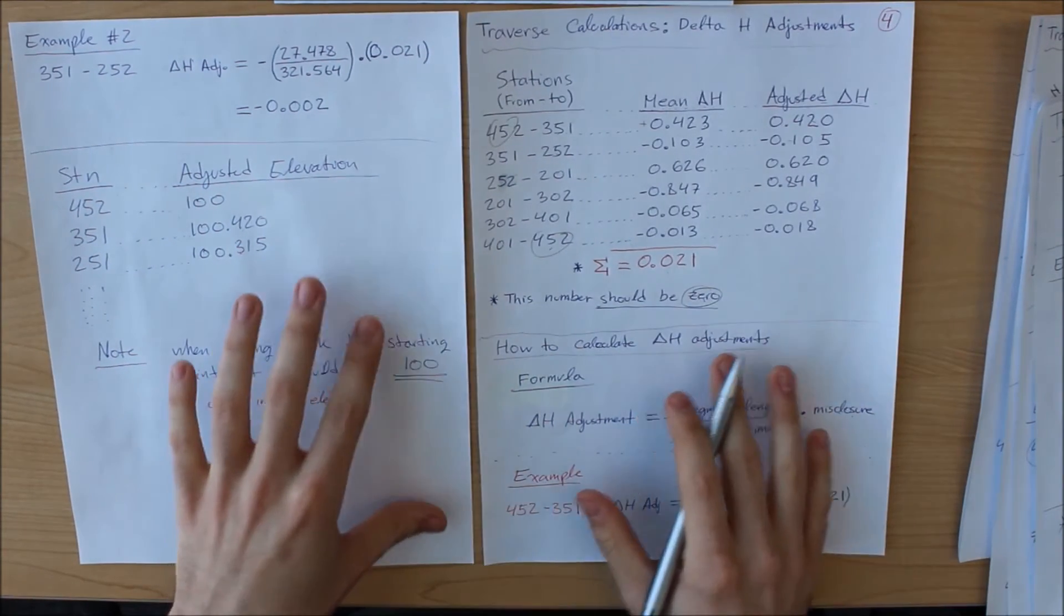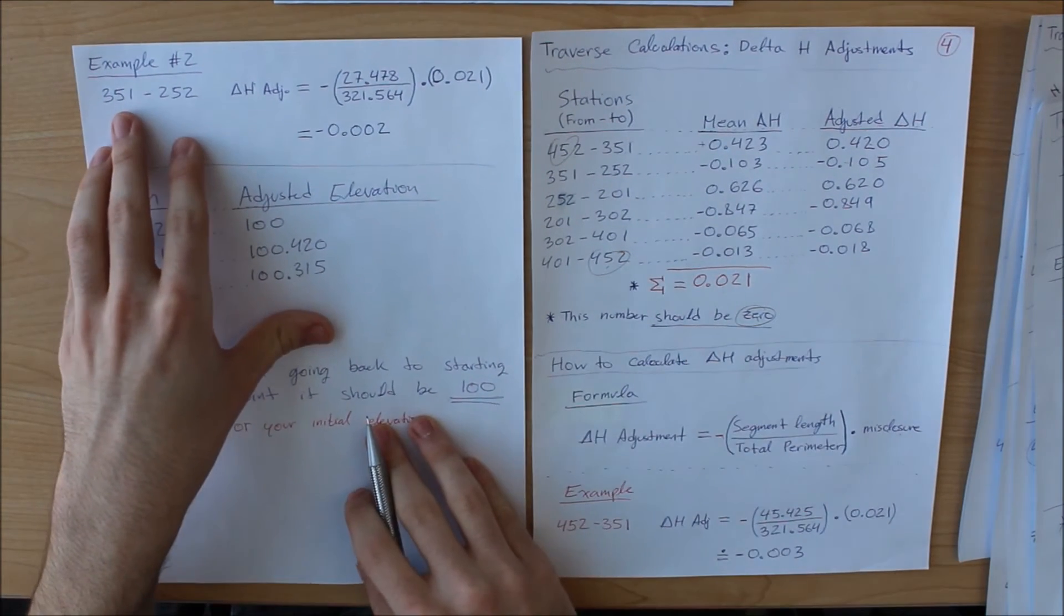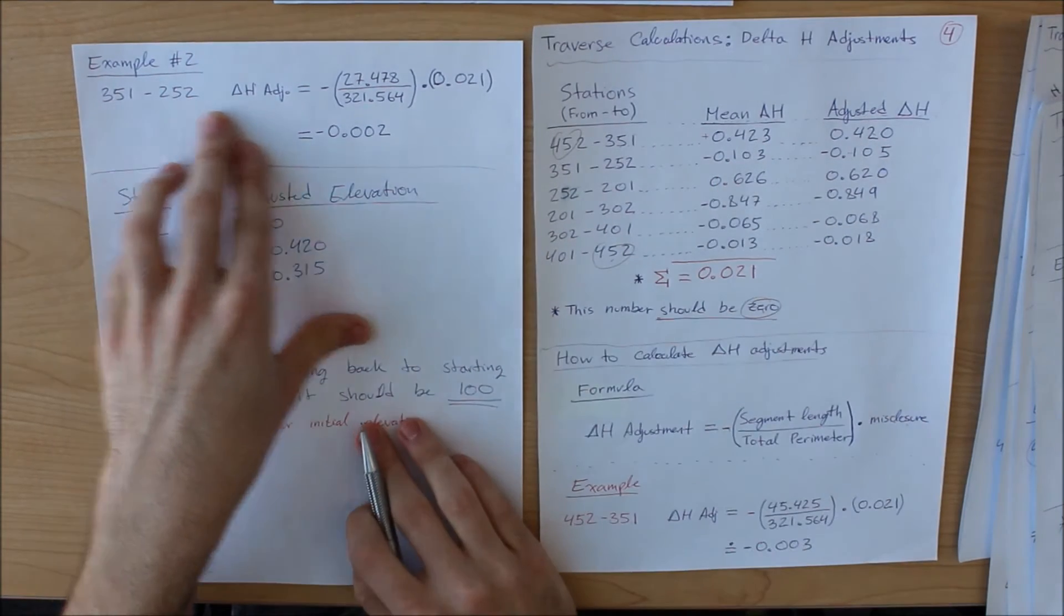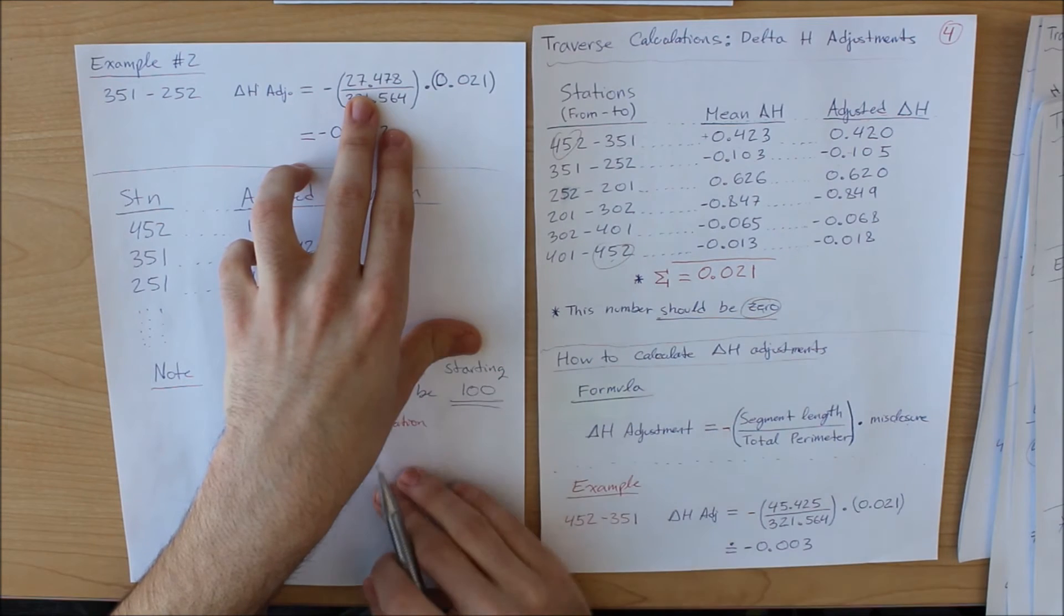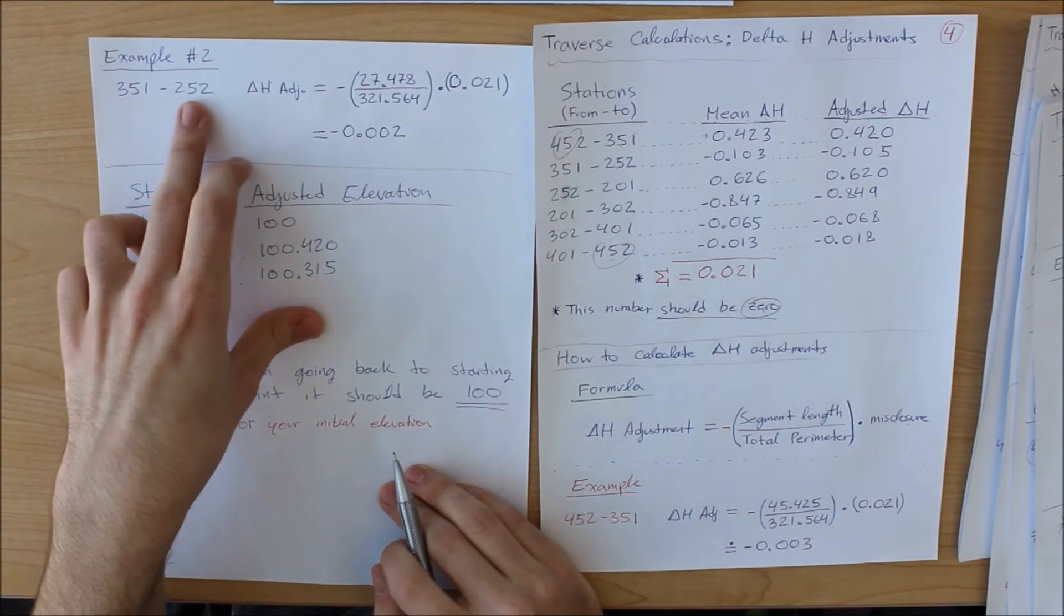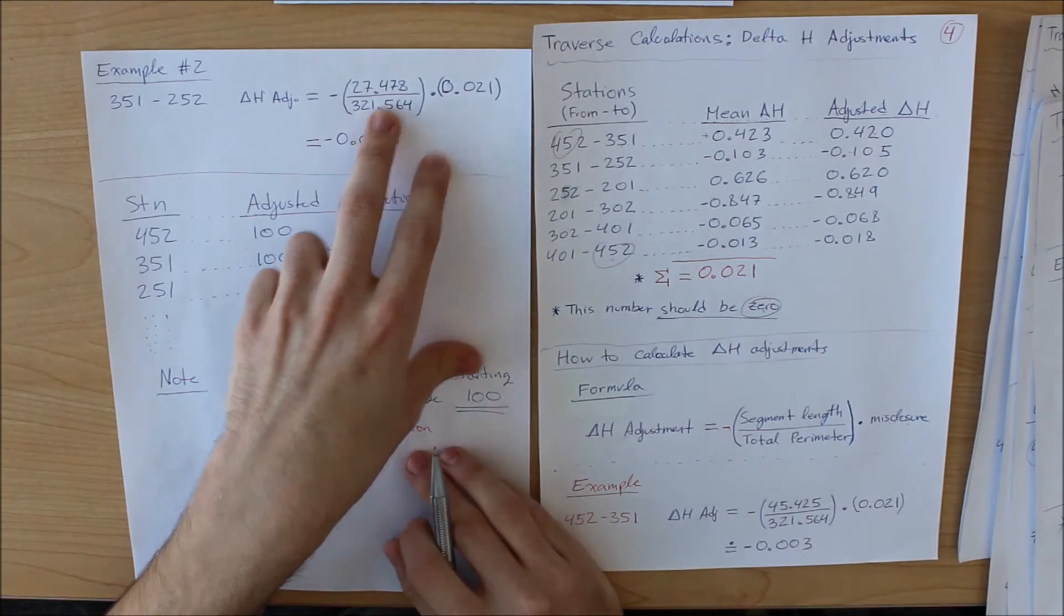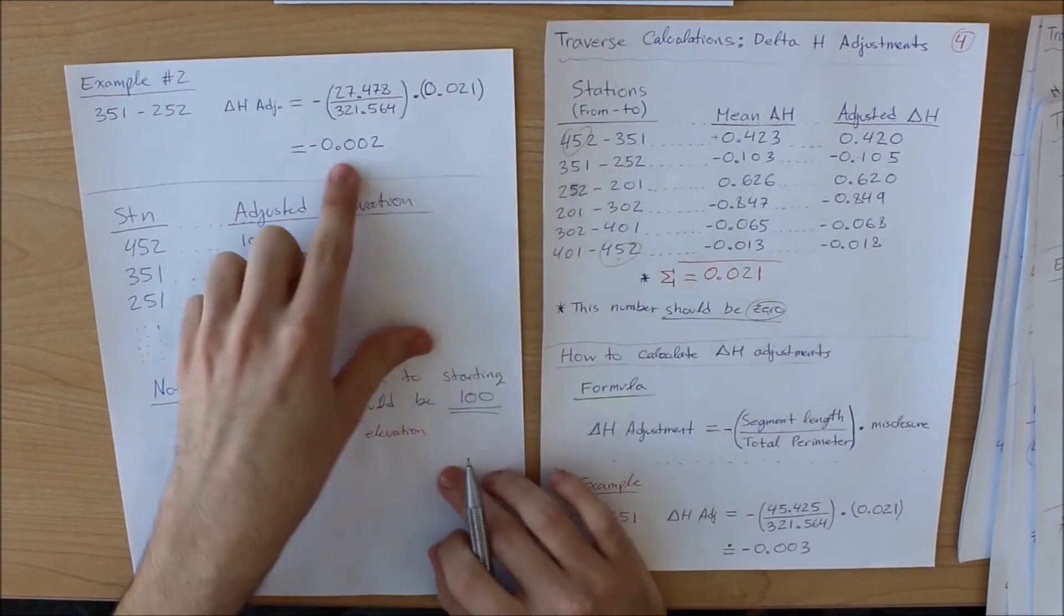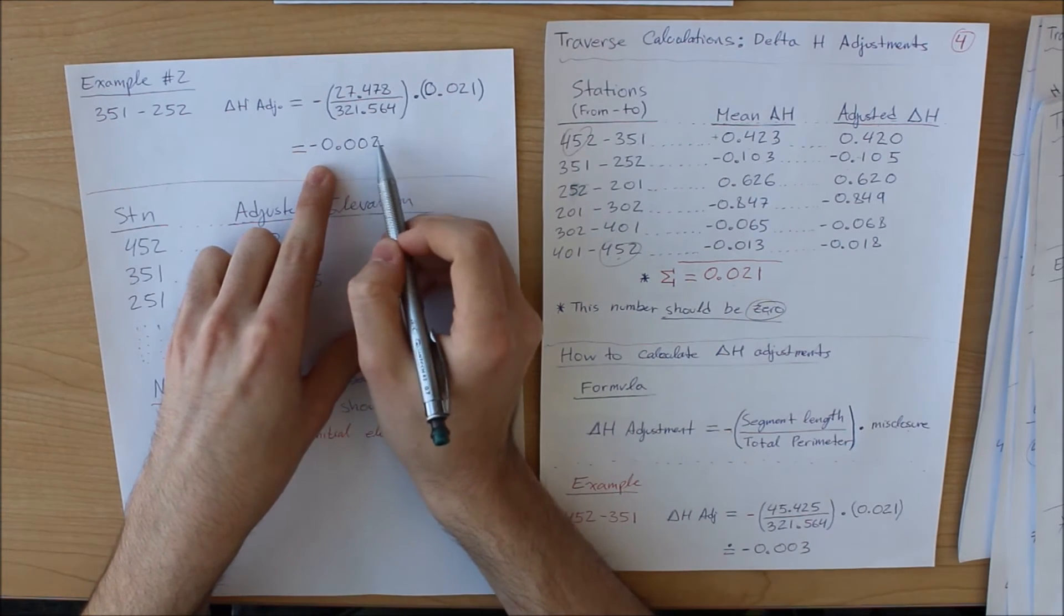Now I am going to do one more example since this is a very short lesson. 351 to 252. So this is the formula. I am plugging in my values. That is the distance between this point to this point. That is the total perimeter. And that is the error. Now once again, we come up with a negative number, and this time it's only 0.002.